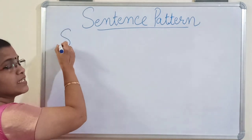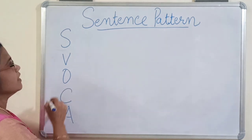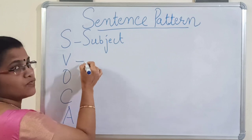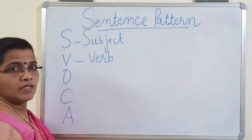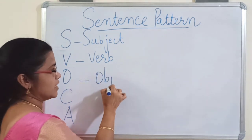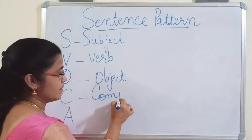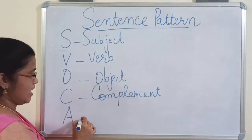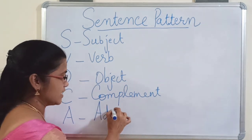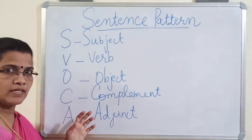Let us learn what are the elements that constitute a sentence. We have the following elements. The first one is subject — S stands for subject. The second one is verb — verb denotes an action or a state. The third one is object — O stands for object. C stands for complement. And the last one, A, stands for adjunct.